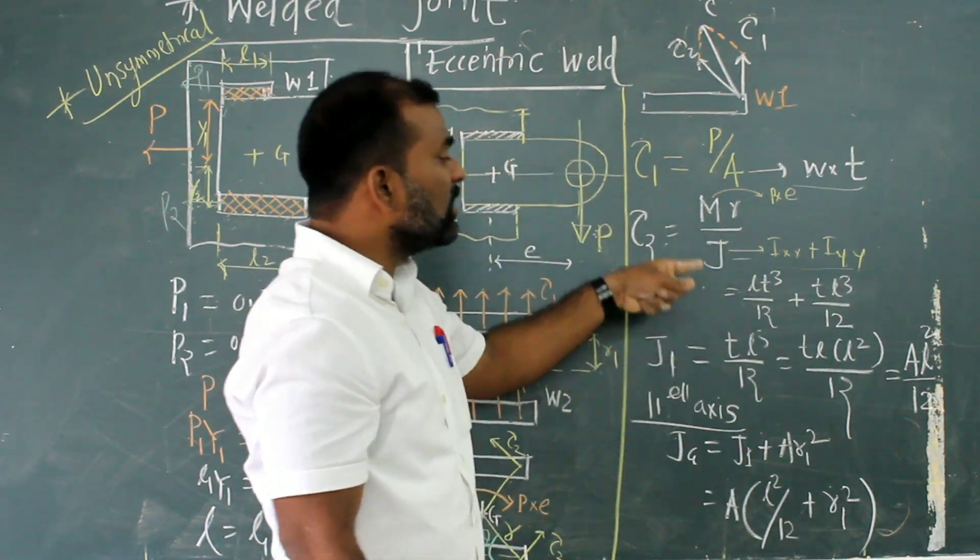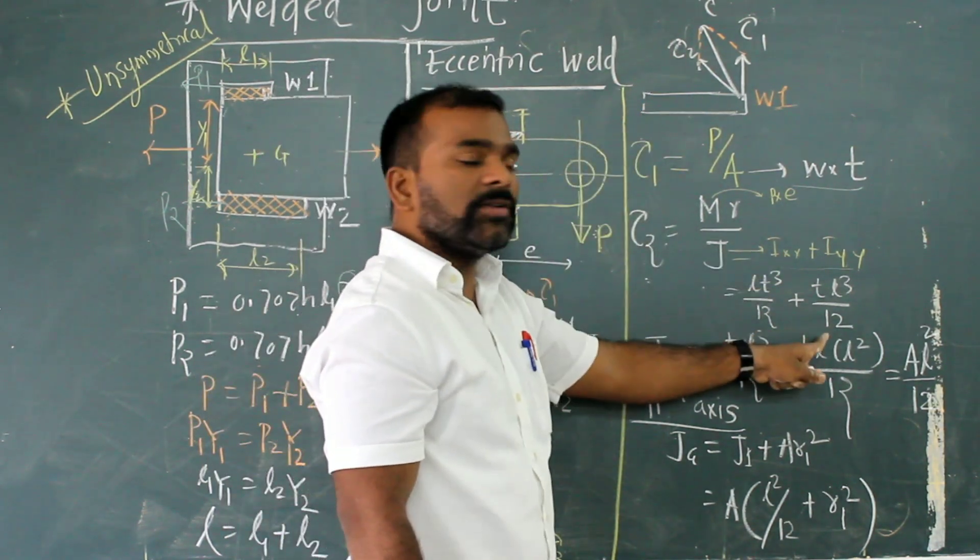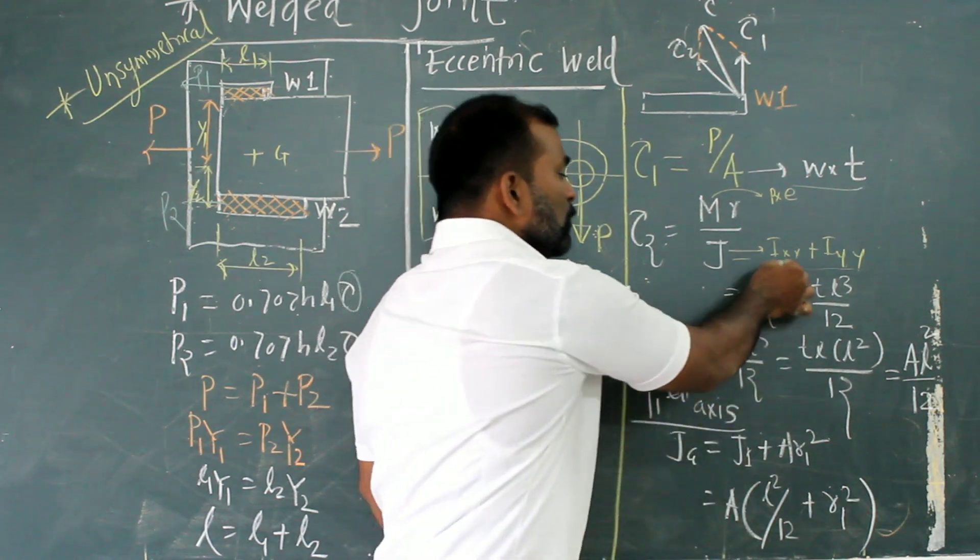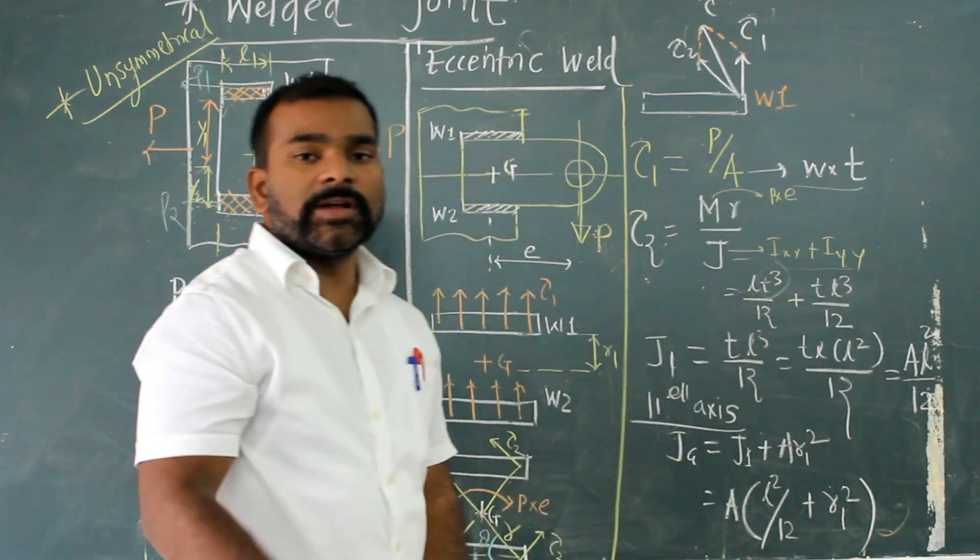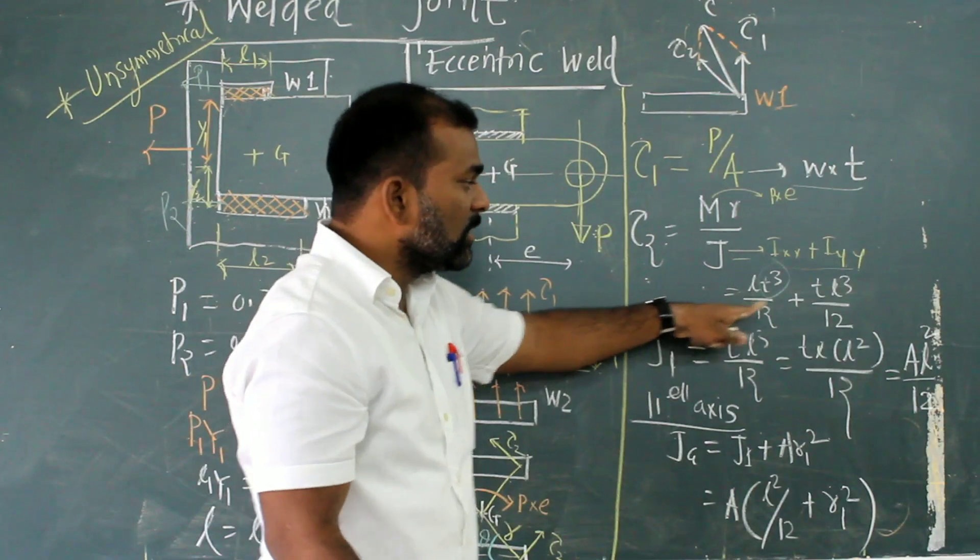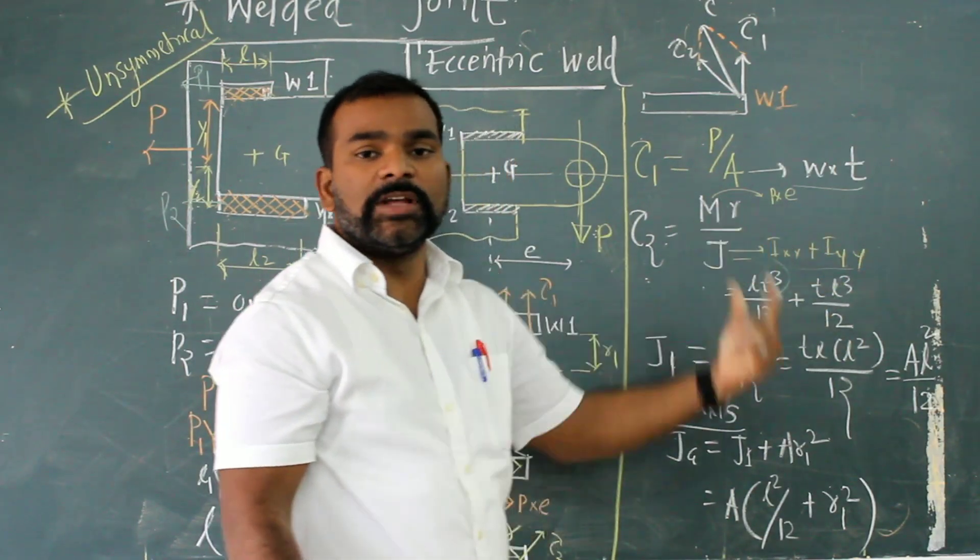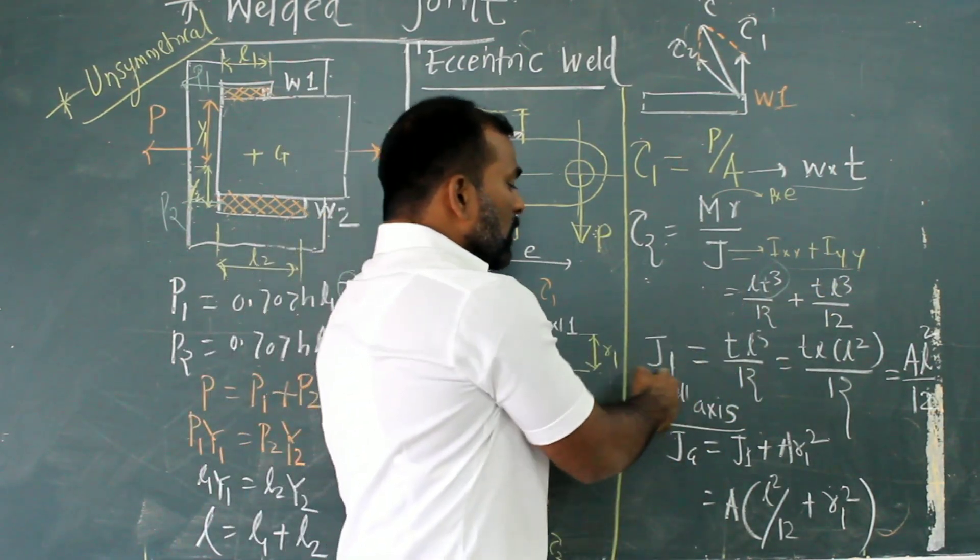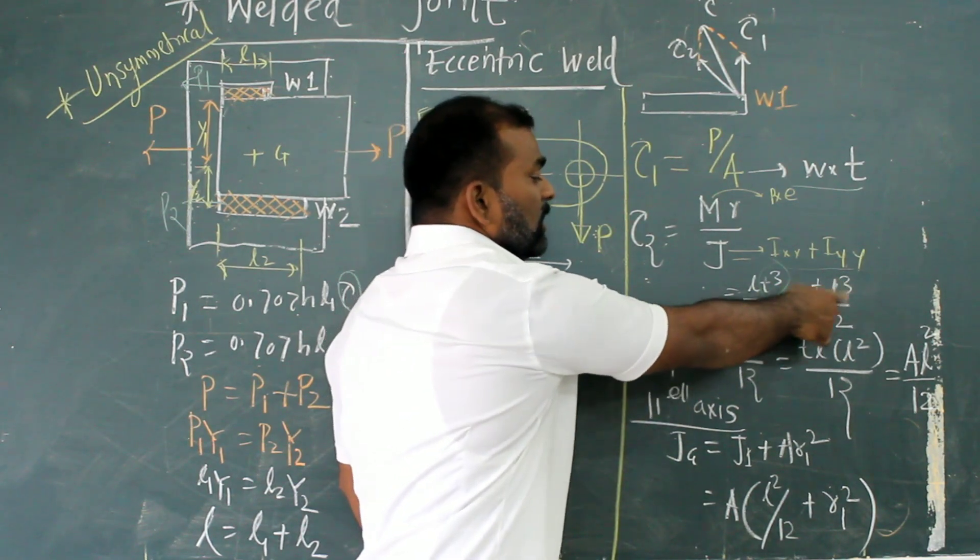And for I, I can take it will be T L cubed by 2. You know that if I increase the thickness value, it will not affect more. That is why I can take maximum value considered with respect to length of weld. If I put here, I will get that is T L cubed by 2.